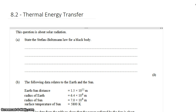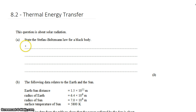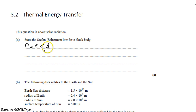David Kahn here with another question from the question bank in topic 8.2, looking at energy transfer and the Stefan-Boltzmann law. First we just have to state the Stefan-Boltzmann law, which is in the data booklet. The total power emitted as blackbody radiation by any object is equal to its emissivity times the Stefan-Boltzmann constant sigma, times the surface area of the object, times the temperature of the object in Kelvin to the power of 4. This is the power of blackbody emissions.